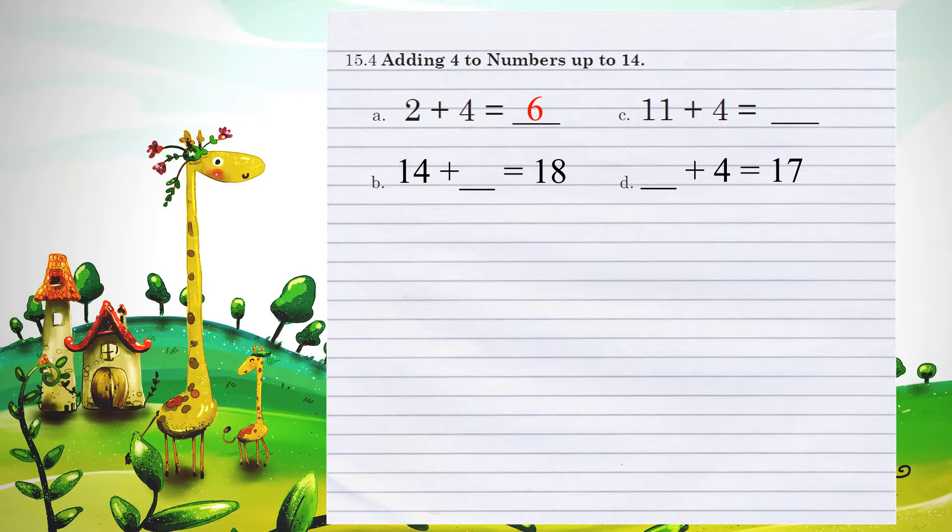Let's look at example B. 14 plus what number equals 18? If I look at the 1's position, how would I get from 4 to 8? Well, you know we'd have to go 4 spots to do that. So, 14 plus 4 equals 18.